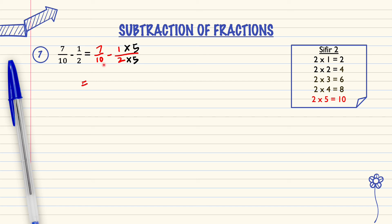7 over 10, we rewrite it. 1 times 5 equals 5; 2 times 5 equals 10. Now the denominator is the same.